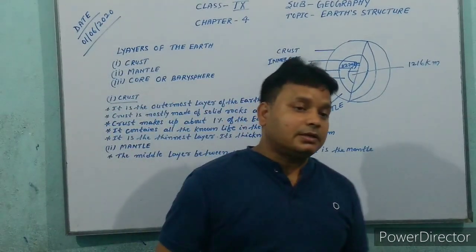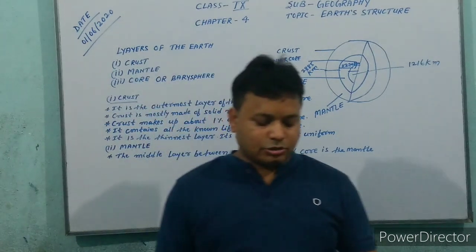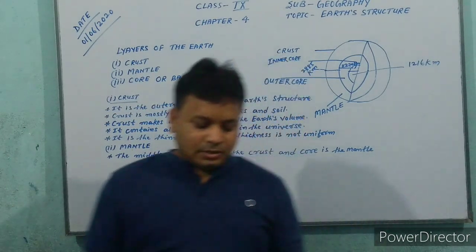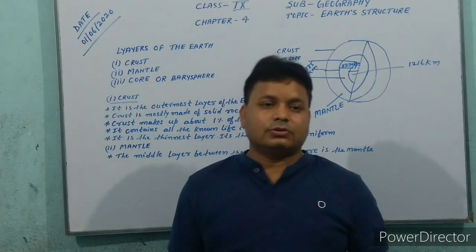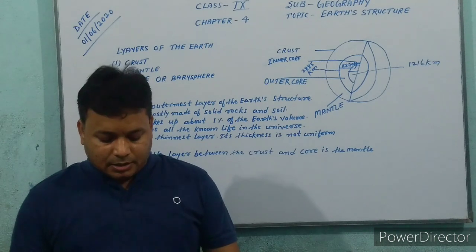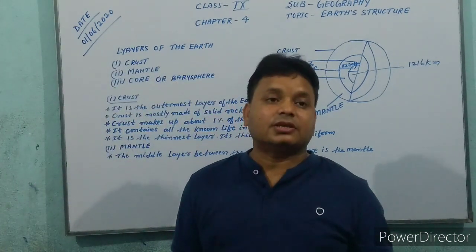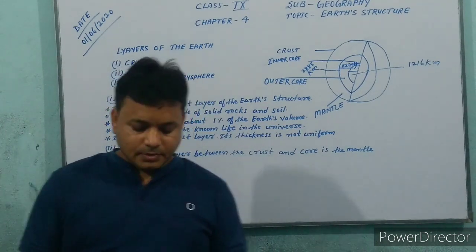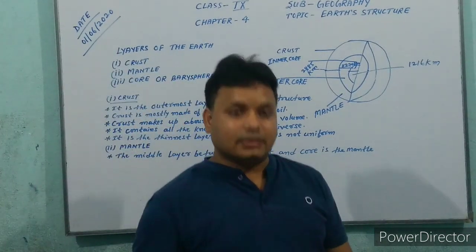The mantle can be divided into three layers. The uppermost layer of the mantle is known as the asthenosphere. The middle layer is known as the transition zone, and the third layer is known as the mesosphere. The two lower layers are made of nickel and iron.